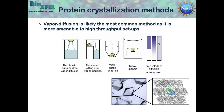No matter which technique you use, the basic principle is the same. You want to subject your protein to a chemical environment involving temperature, pH, and concentration that forces it to come together and form a continuous lattice in a more desirable energetic configuration, such as the one shown here at the bottom, highlighting a crystal.